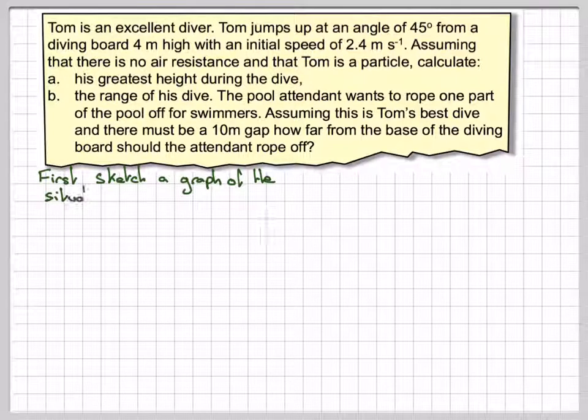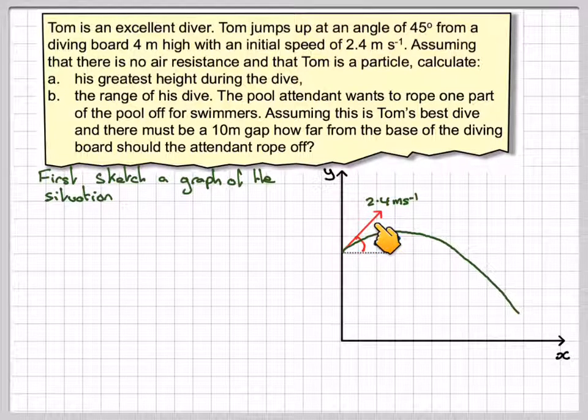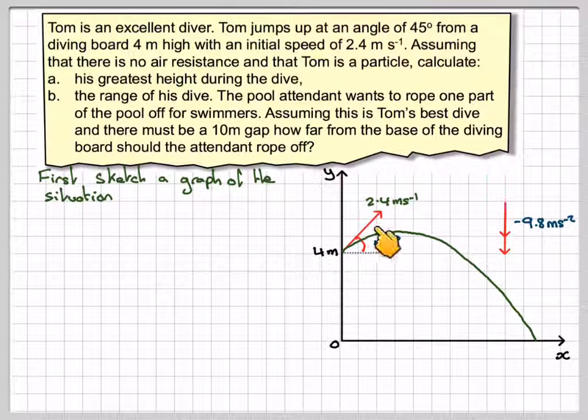First sketch a graph of the situation. So we have x, y axis and an initial velocity of 2.4 metres per second at 45 degrees to the horizontal and this is the path of the dive. So we have gravity acting down at minus 9.8 metres per second squared and the diving board is 4 metres high.